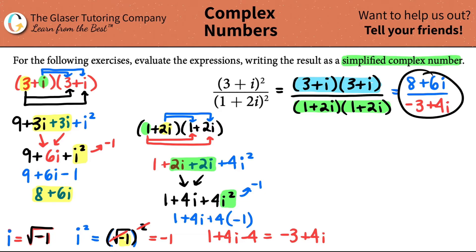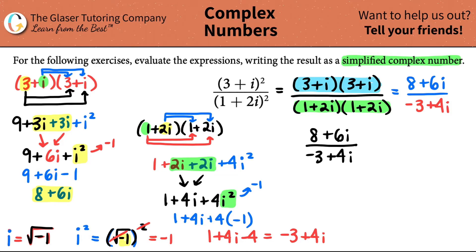So the denominator is negative 3 plus 4i. But it looks like I can't really do much here - 8 plus 6i all divided by negative 3 plus 4i. What's the rule of thumb? I have an i, and the imaginary component cannot be in the denominator. How do we get it out? Well, we've done tons of problems with this issue.